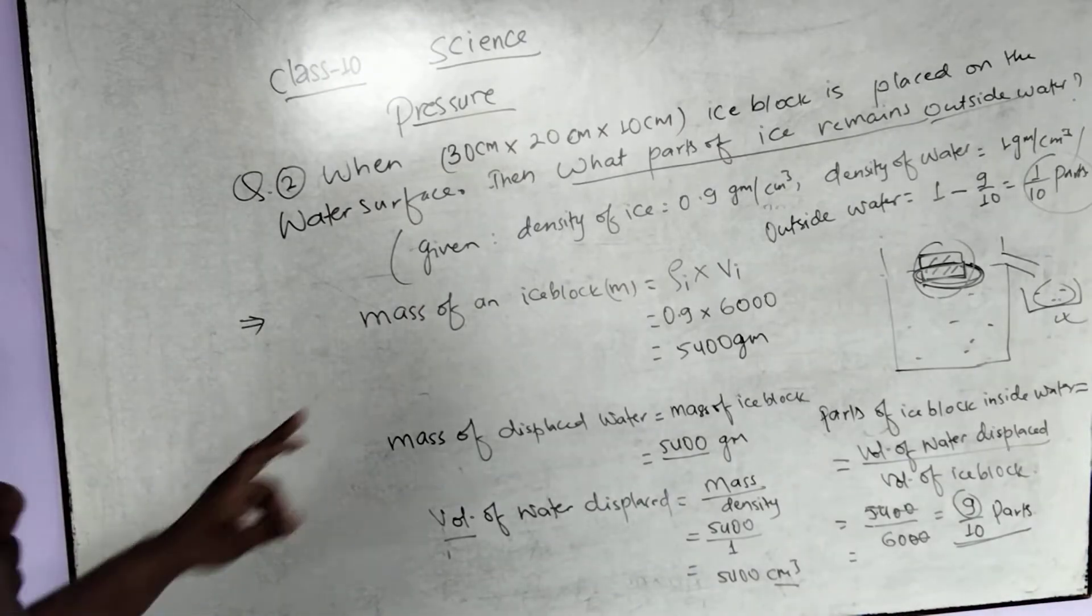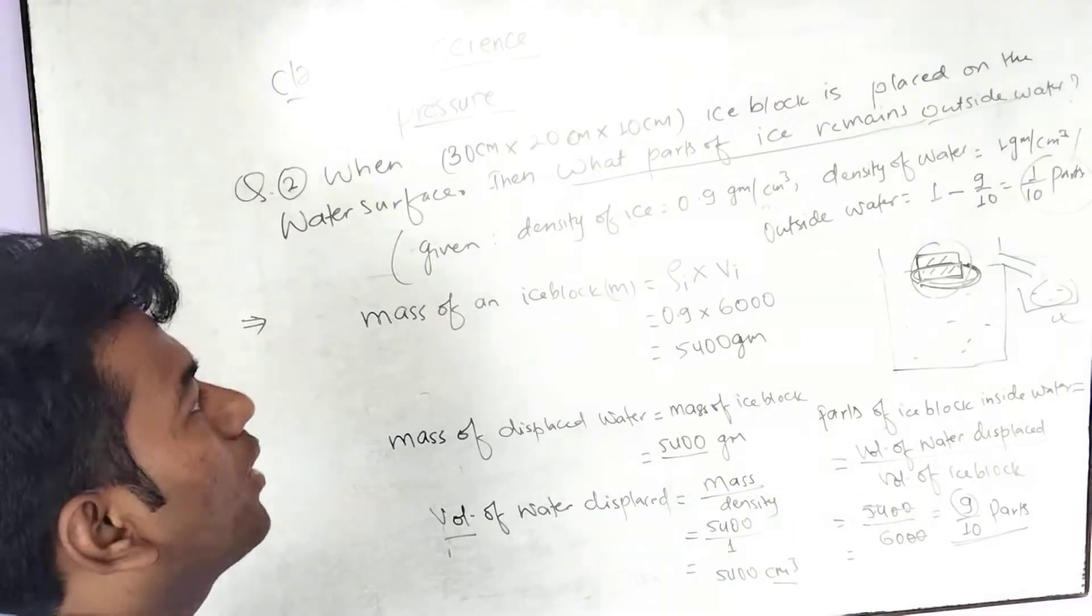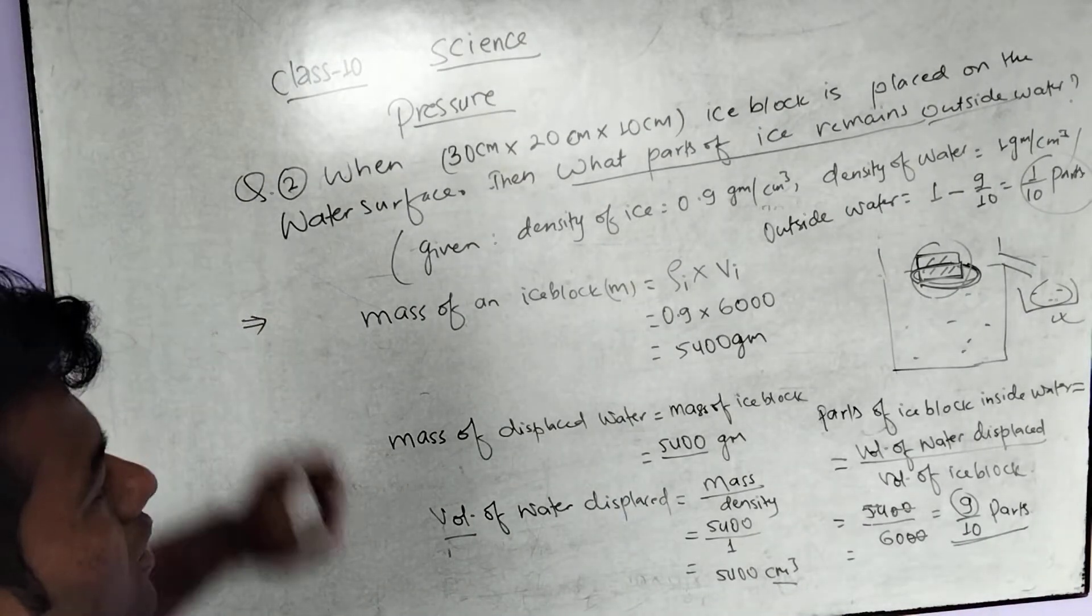When a 30 cm by 20 cm by 10 cm ice block is placed on the water surface, then what parts of ice remains outside the water? This type of problem is important.